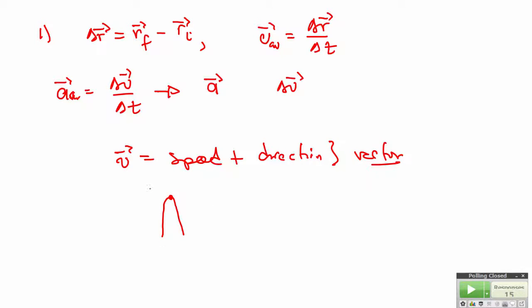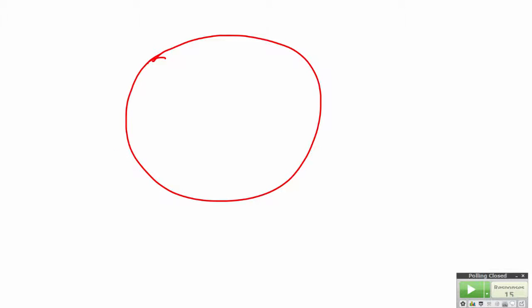The third case in which an object can accelerate is when the speed remains the same but the direction changes. Now, for an object to move in a circle, the speed of the object must be constant. If the speed changes, then the path of that object will become an ellipse. So, for an object to move in a circular path, the speed must be constant.